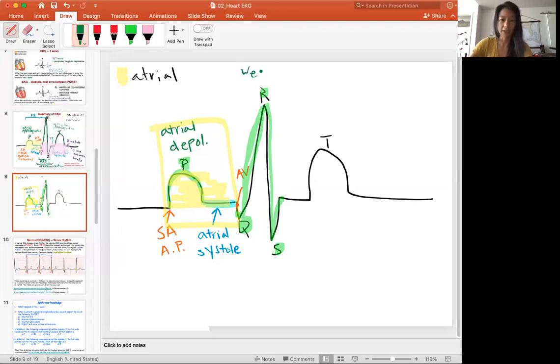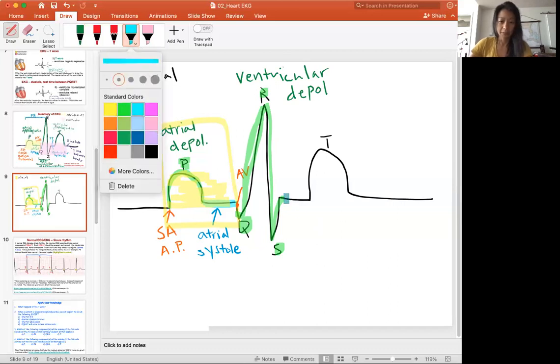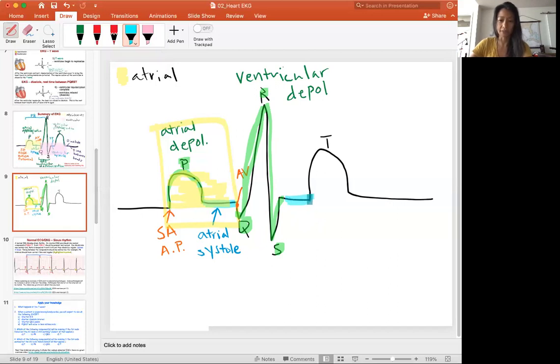This is ventricular depolarization. So now the ventricle is depolarized. Now it's going to move into a period of, again, no electrical change, but this is where the ventricle will pump the blood and push the blood out into the lungs and into the body. So this is now the ventricular systole.